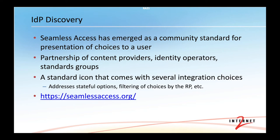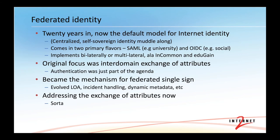Identity-provider discovery: Seamless Access has emerged as a paradigm and community standard. It was developed by content providers, identity operators, and standards groups. There's a standard icon that users can know to click on to discover their identity provider. There are several valuable integration choices that a relying party and a user can opt for that can make the experience of finding your identity provider very efficient. SeamlessAccess.org is the site for more information.